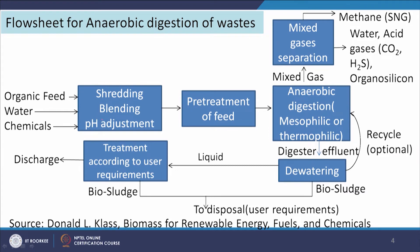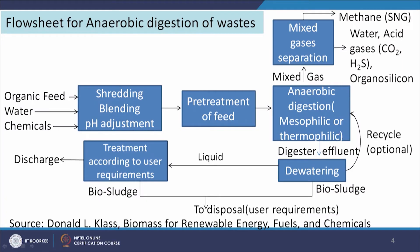Looking at the flow sheet of anaerobic digestion of waste: the feed undergoes preliminary steps including shredding, blending, and pH adjustment. Sewage sludge can be used directly or mixed with other feedstocks — co-digestion is also possible. Pretreatment of the feed follows, depending on the nature of the compounds present in the sludge or other biomass.